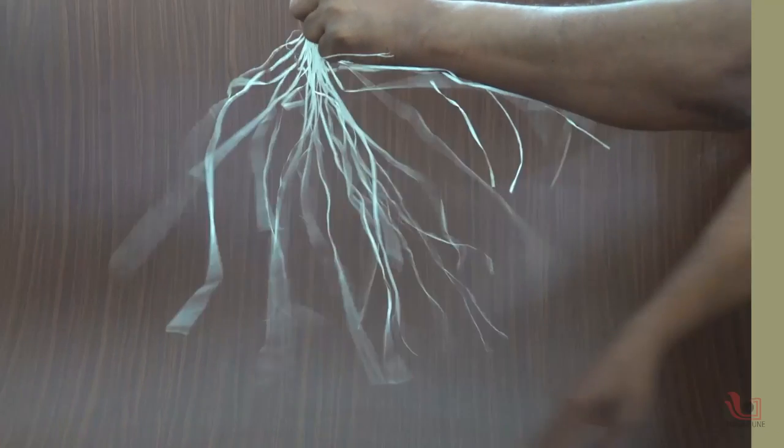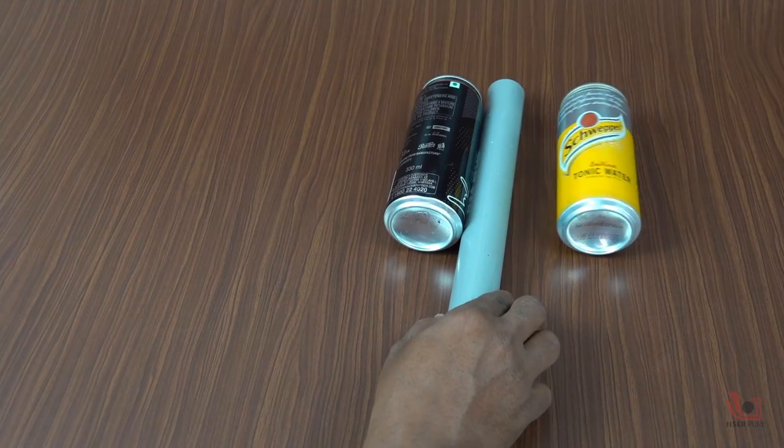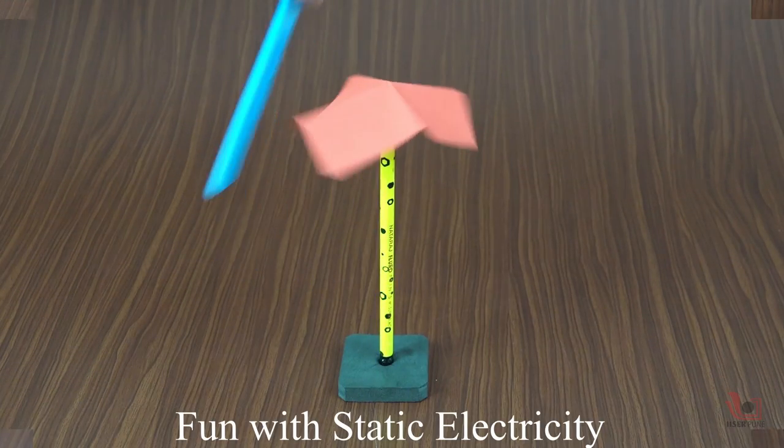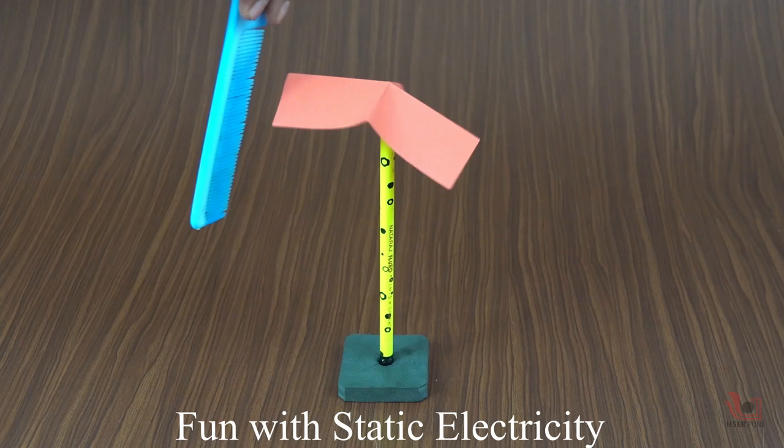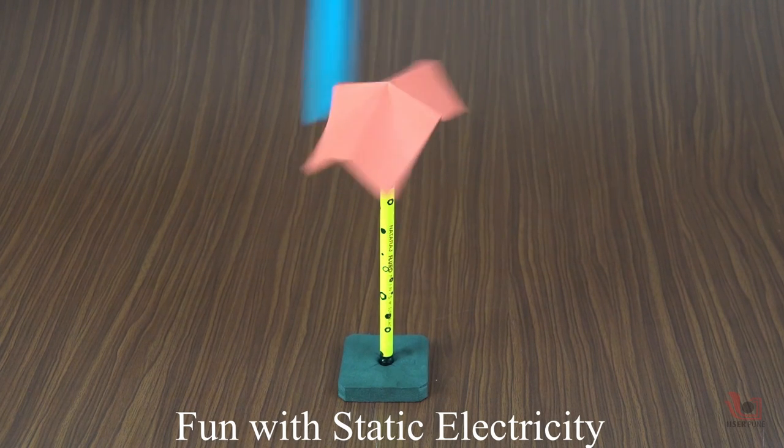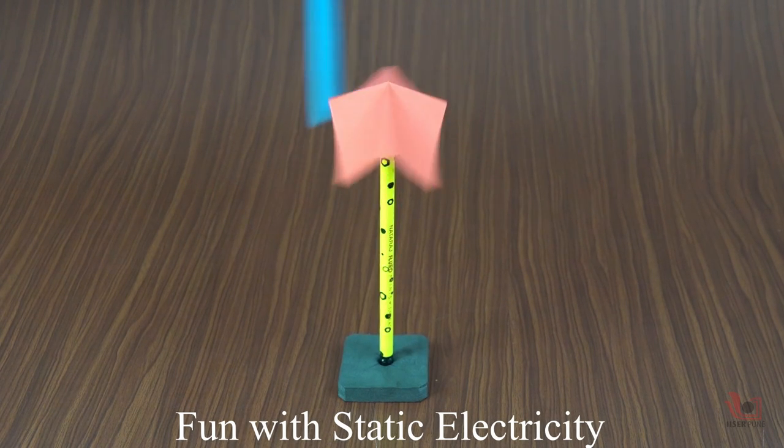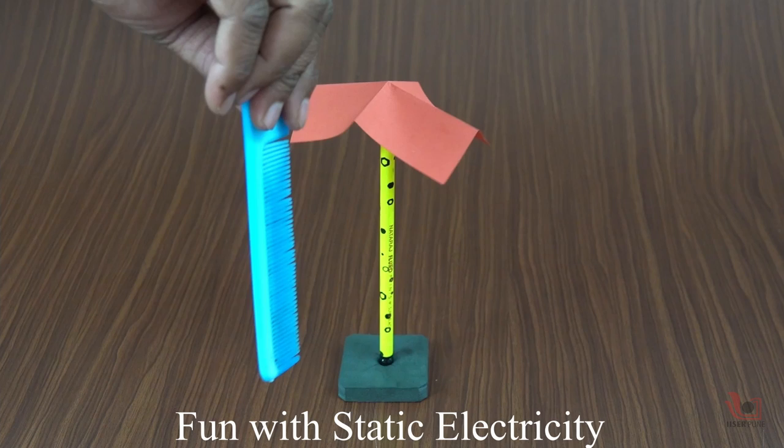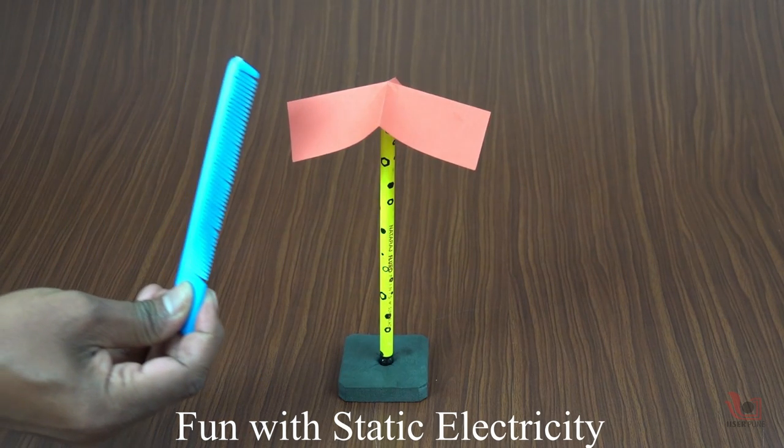There are various experiments that can be done using static electricity. Here we are showing you how an ordinary piece of paper will rotate without anyone touching it, without blowing on it or without any battery.